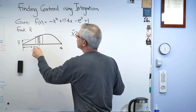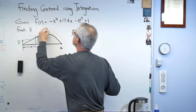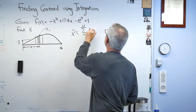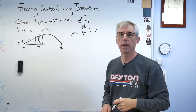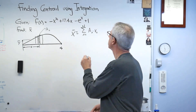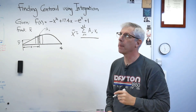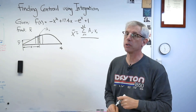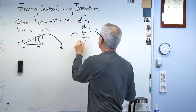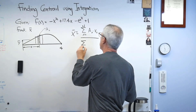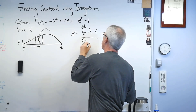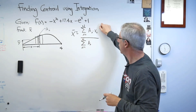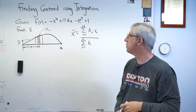It's an area times a distance, and in mathematical terms this would be called a first moment of area. What I need to do then is divide by the sum total of all the areas. If you go through your statics textbook or your strength of materials textbook, that's how you figure out what a centroid is.